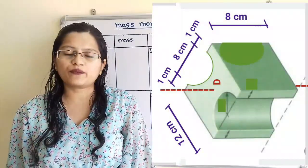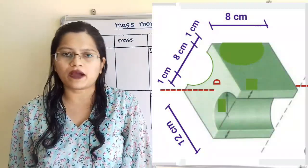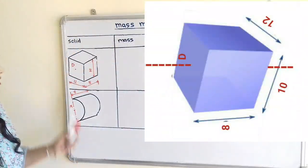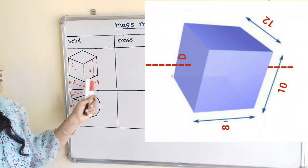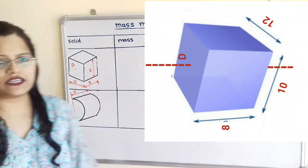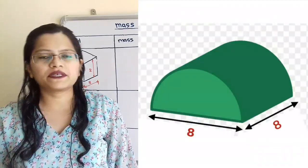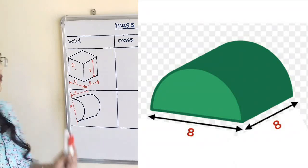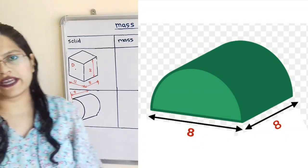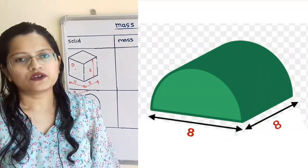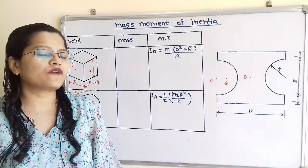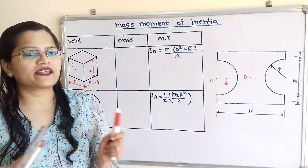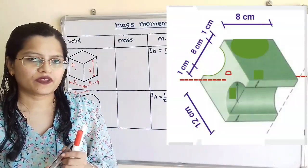We will divide this composite body into three parts. First is a solid block with dimensions: base is 12, width is 8, and height is 10. Two semicircles are identical, whose radius is equal to 4 and length is equal to 8. To find out mass moment of inertia of this composite body, we have to use the parallel axis theorem.